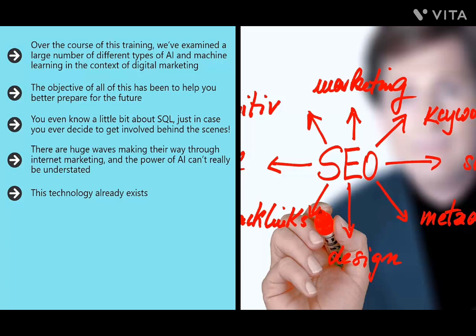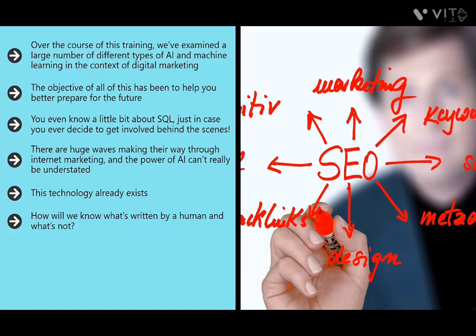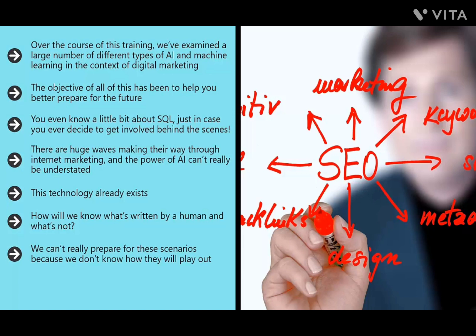Imagine what will happen once AI that can write high-quality content becomes commonplace and commercially available. This technology already exists — AI that can write nearly as well as a human. When let loose on the web, it could potentially flood the internet with enough content to double or triple its size in days. How will we know what's written by a human and what's not? What about when AI can create realistic-looking images? We've already seen the power of deepfakes.